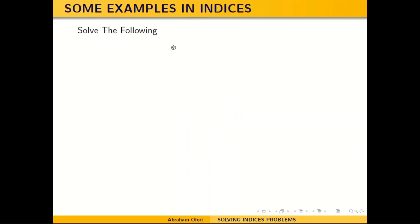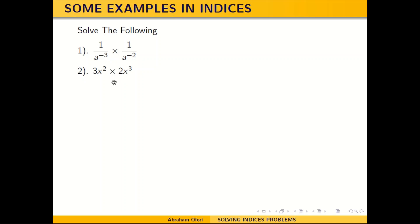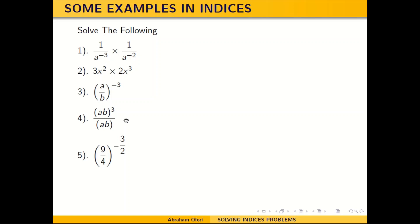You have to simplify the following. The first one is 1 over 8 to the negative 3, multiplying 1 over 8 to the negative 2. There is a second problem to solve here, a third problem to solve here, and these two as well.